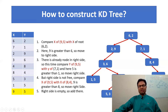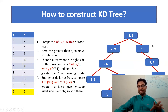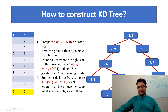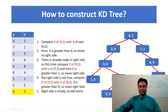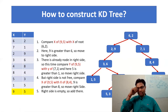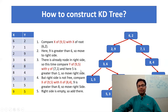Now the last node, (9, 5). Compare 9 with the root 6: 9 is greater than 6, so go to the right side. Right side already has element (7, 1). Compare y: y of (9, 5) is 5, y of (7, 1) is 1. 5 is greater than 1. So (9, 5) goes to the right side of (7, 1). But there is already a node there — (8, 4). This time compare x: 9 compared to 8 — 9 is greater. So it goes to the right side. No element on the right side, so put (9, 5) there. This is the final KD Tree of the given data.